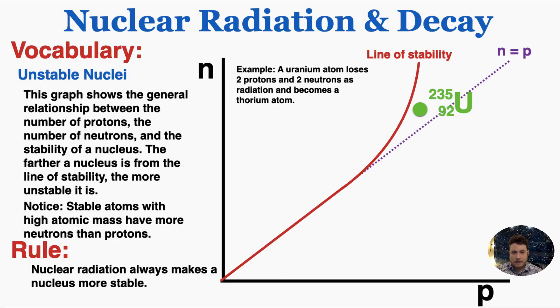As an example, if this uranium atom undergoes decay, it's going to lose two protons and two neutrons. If the number of protons and neutrons that it loses are equal to each other, it's going to move parallel to that purple line because that's where the protons and neutrons are equal. When it becomes thorium, it's now closer to the line of stability than it was before. This fits the rule that nuclear radiation always makes a nucleus more stable than it was before.